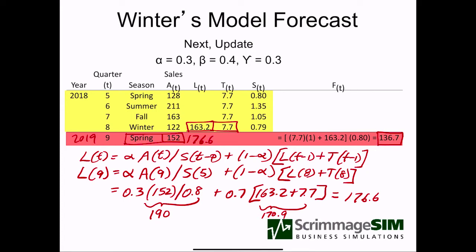The Winter's model formulas make it adaptive — we adapt to our under-forecast or over-forecast. So if there's a pattern, if our model changes underneath, we adjust to it.